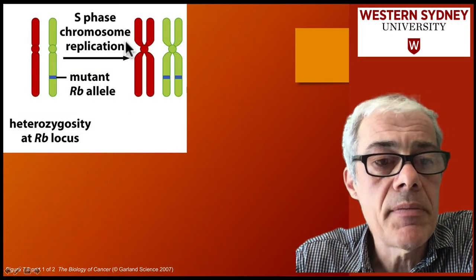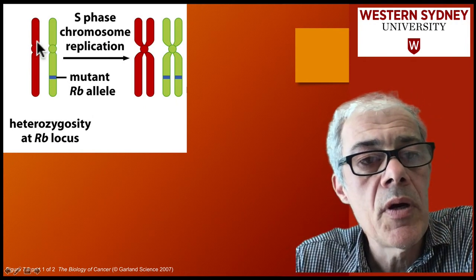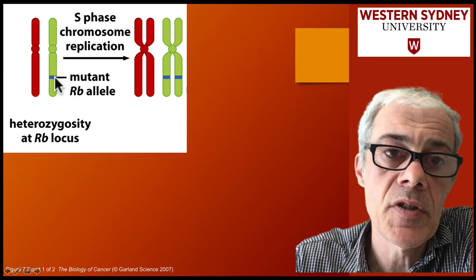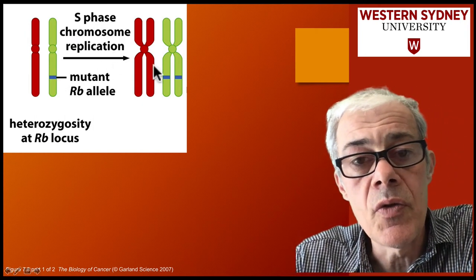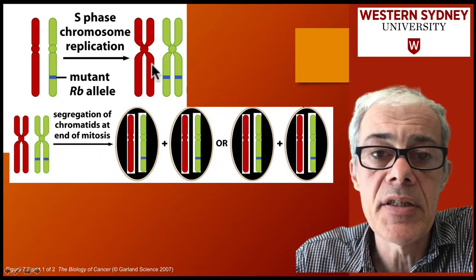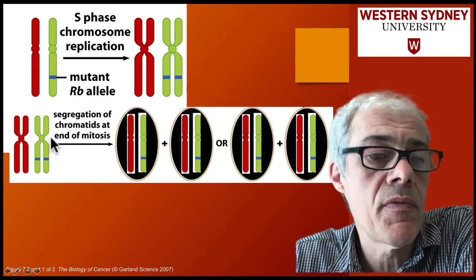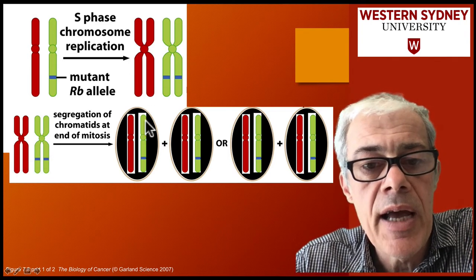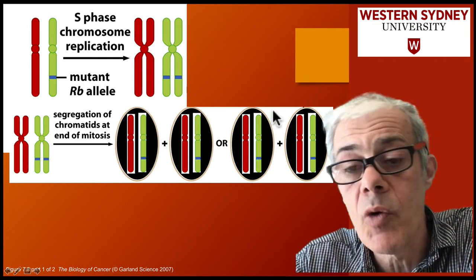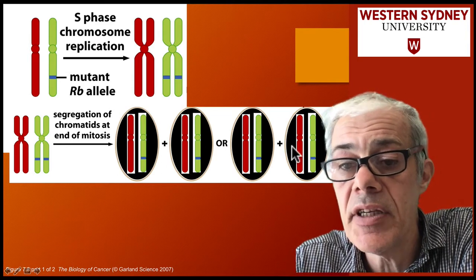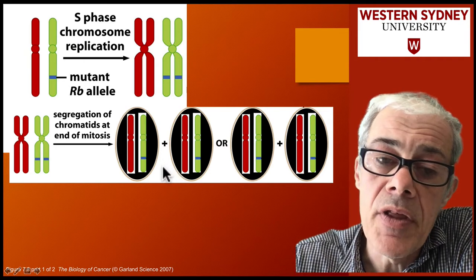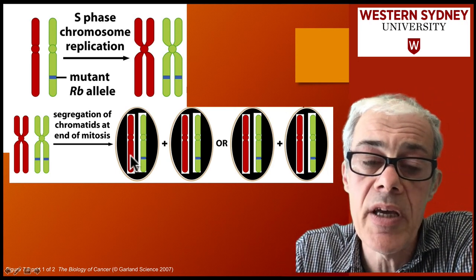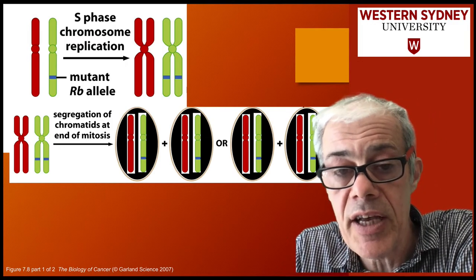We've got two chromosomes from different parents — maternal and paternal copies — and one of them contains a mutant allele. We can look at the segregation of these alleles in the mother-to-daughter cells and look at all of the combinations possible between these parents. Effectively, all four possible combinations are going to be heterozygous. So you're not going to see the effect of this mutation, because you've got a good copy, and like the brake in a car, the good copy functions, and therefore the cell grows normally.